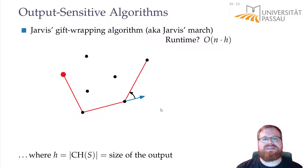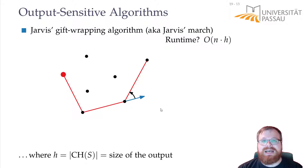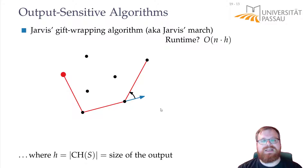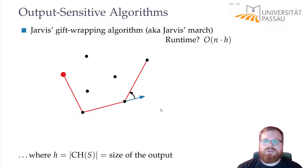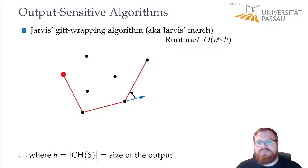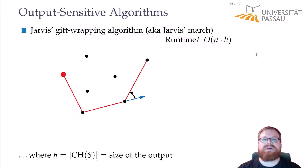These two algorithms were for a long time considered optimal for convex hulls. Everybody agreed: it doesn't get better than that. You can do O(n log n) time in general and you can prove you cannot do better. But if you have a very small number of points on the convex hull, then you have this output-sensitive algorithm — and that was it.